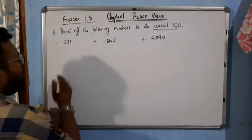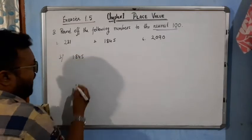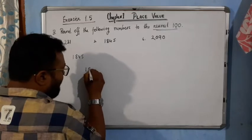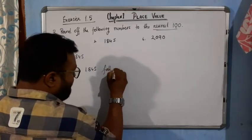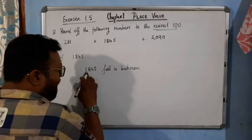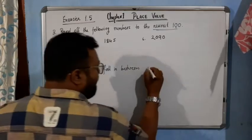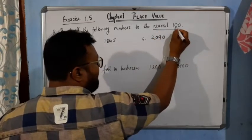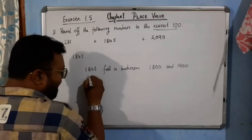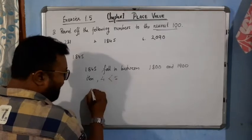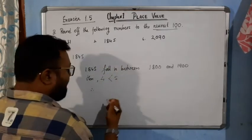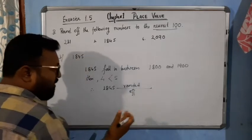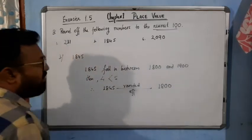Now come to the next one: number 3, which is 1845. We are talking about nearest hundred, so only three digits. 1845 falls in between 1800 and 1900. For nearest hundred, we check the tens digit. The tens digit is 4. 4 is less than 5. Therefore, it will be nearer to the lower hundred. So 1845 rounded off to the nearest hundred will be 1800.